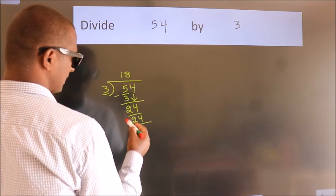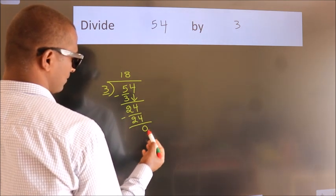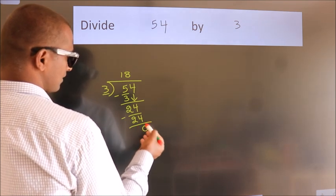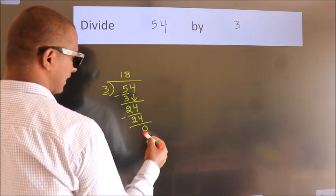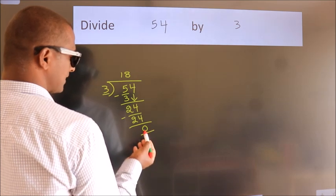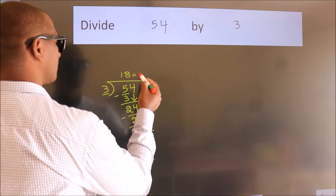Now we subtract. We get 0. After this, no more numbers to bring down, and we got remainder 0. So this is our quotient.